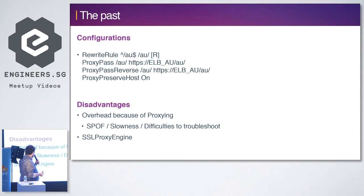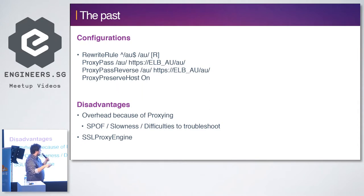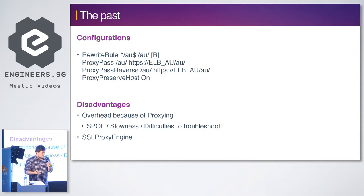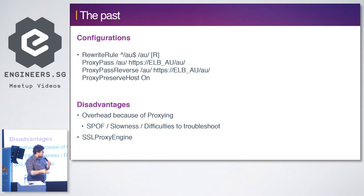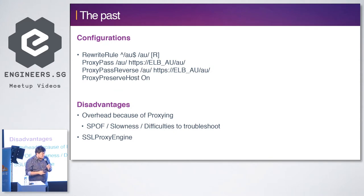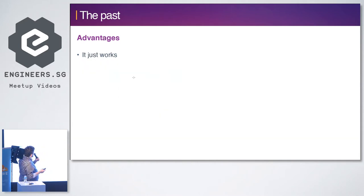The other big disadvantage is the whole SSL proxy engine, because now you have two Apache instances that need to trust each other. How is that trust going to work? Are you using certificate pinning for SSL? Are you allowing only certain CAs? Are you trusting based on certificate lifetime? So a lot of questions you have to figure out with a proxy engine. But the advantage is — it works, I guess.